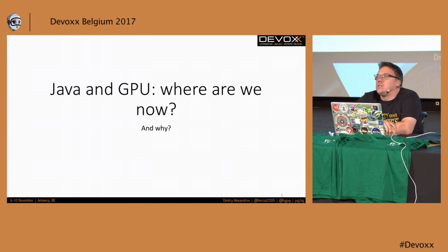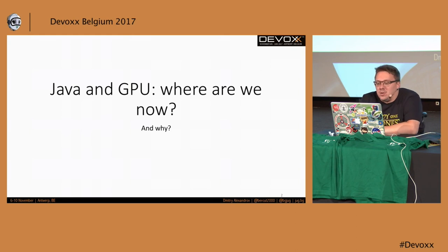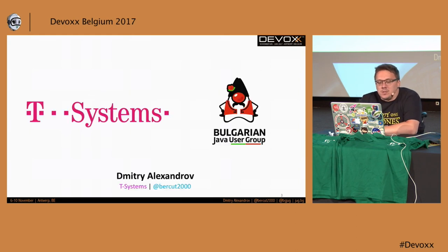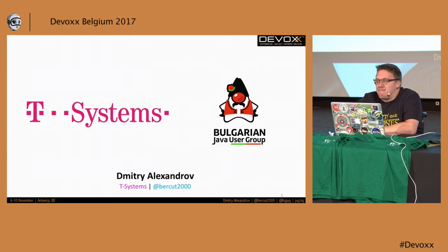It's a good idea to start right now — it's the last session before the keynote, so I've got a challenge to keep you awake. Welcome to my talk: 'Down on the GPU.' A few words about me: my name is Dimitri, I'm a principal developer of systems, and I'm also a Bulgarian Java User Group member. Here's my Twitter handle so you can follow me.